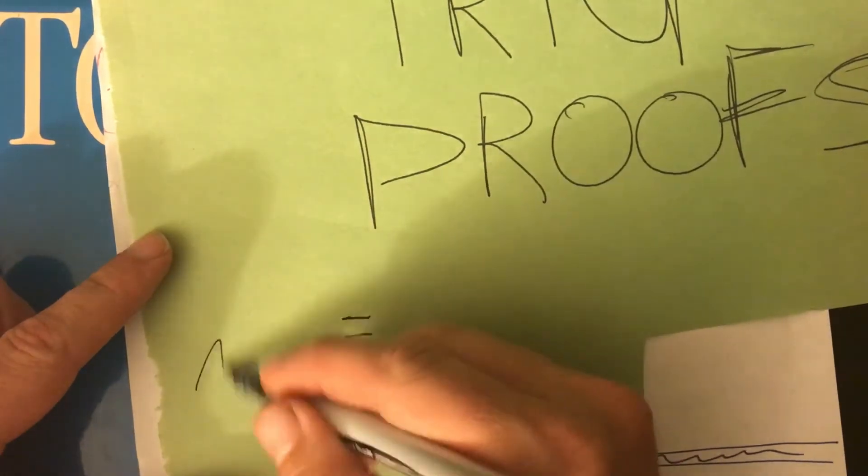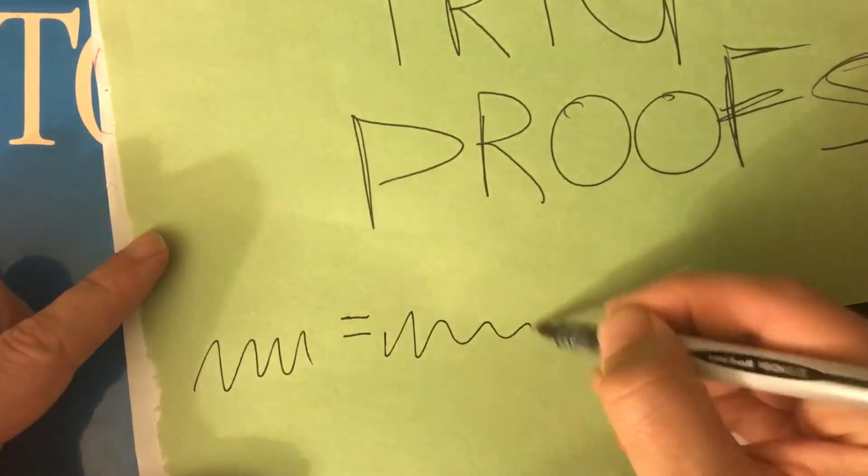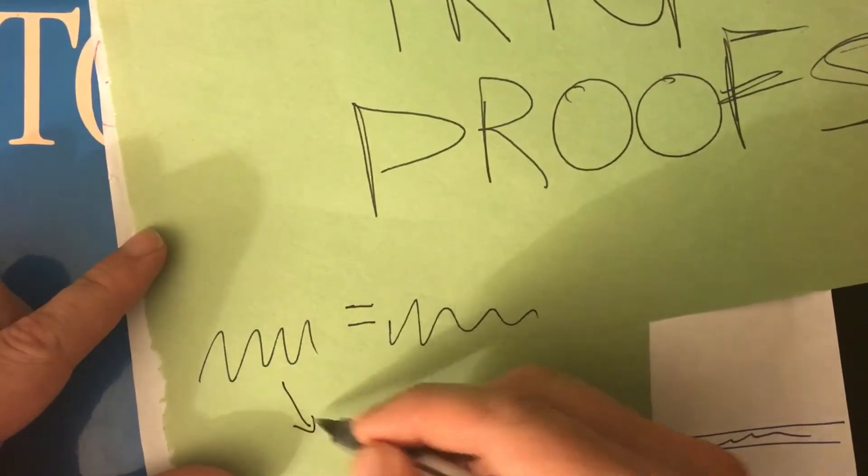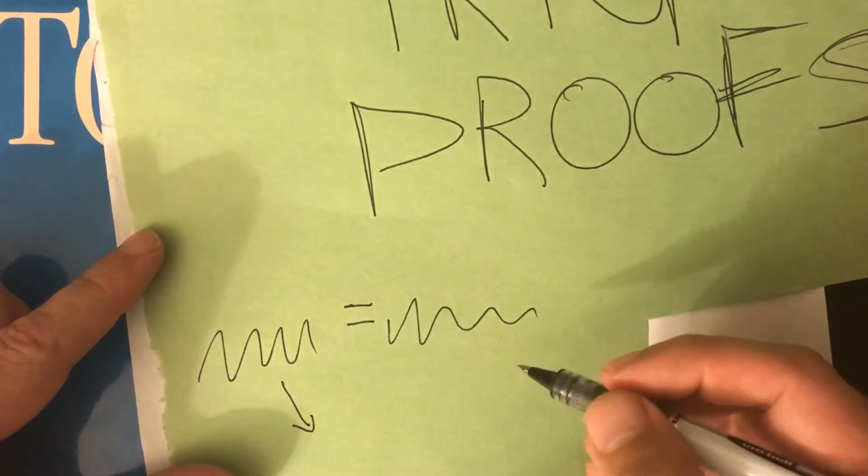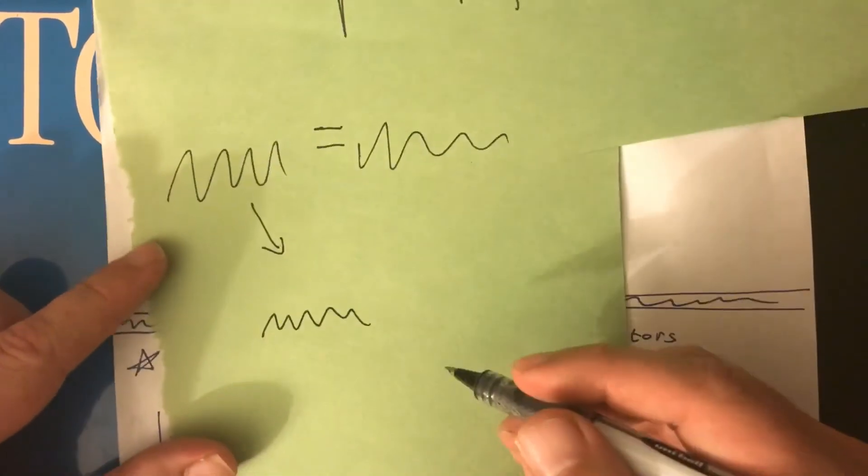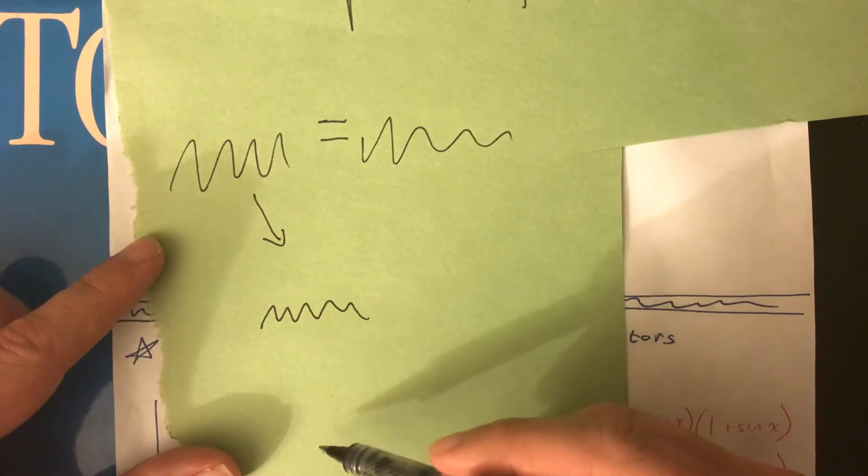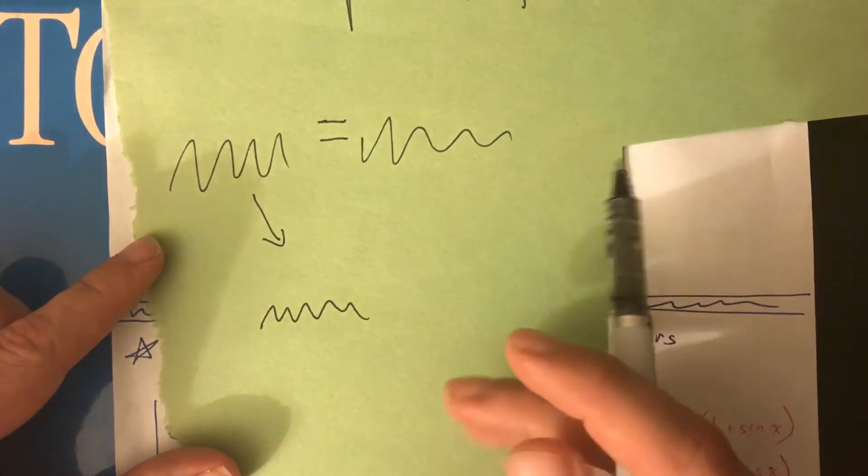Stuff like... and the goal will be to write one of these expressions, maybe this one here on the left side, manipulate it, change it, use algebra, use tricks, and in the end have the expression change into what was on the right side.